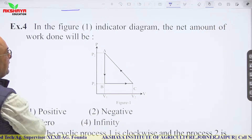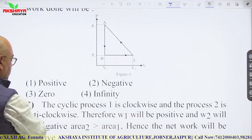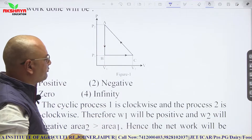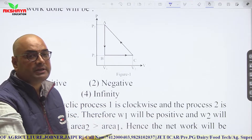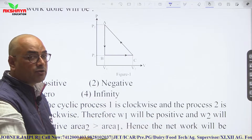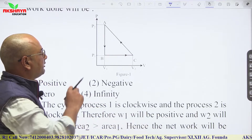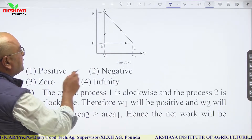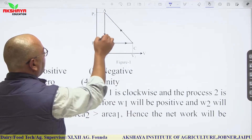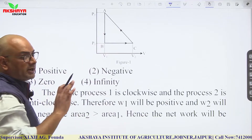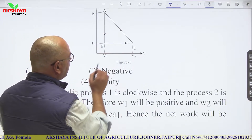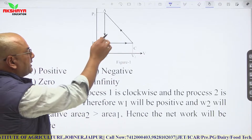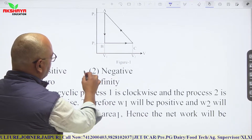For an indicator diagram — the net work done: the process is anticlockwise, so work done overall is negative. From A to B: volume is constant, no work done. From B to C: volume increasing, work done is positive. From C to A: volume decreasing, work done is negative. Overall work done is negative.